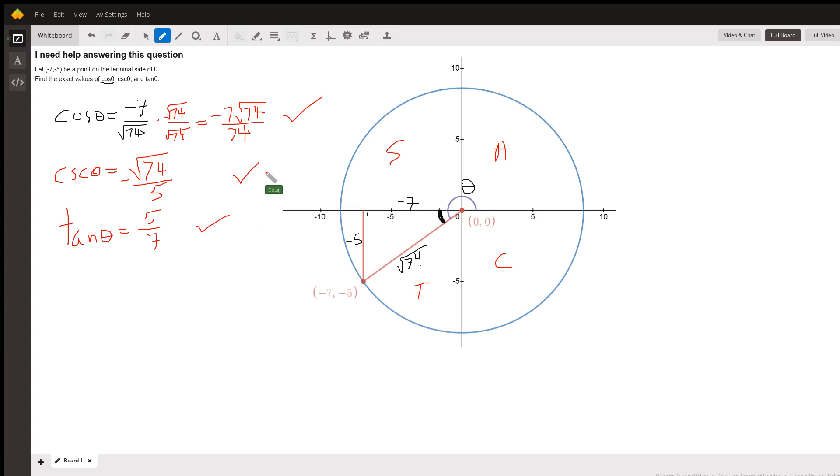Okay, there you go. Hope that helped you. The key to this problem was sketching the reference angle and triangle and figuring out that the hypotenuse was the square root of 74.